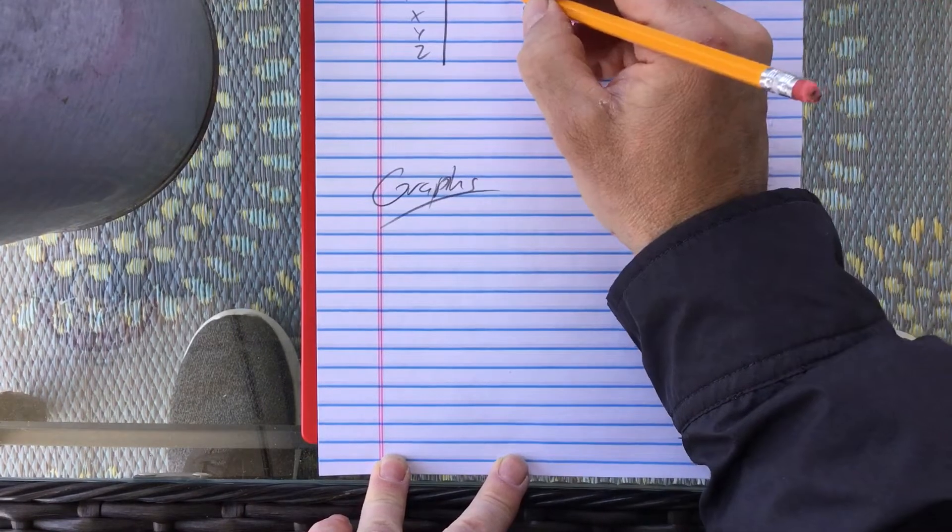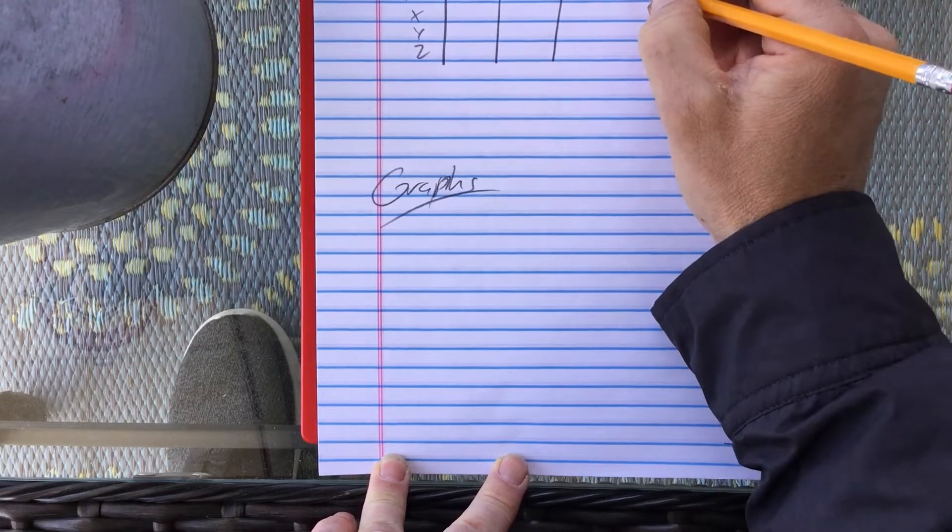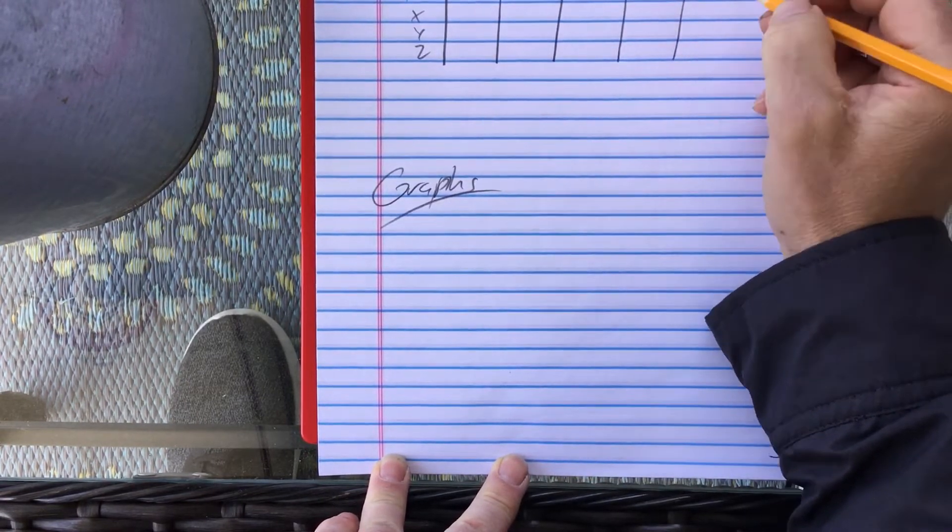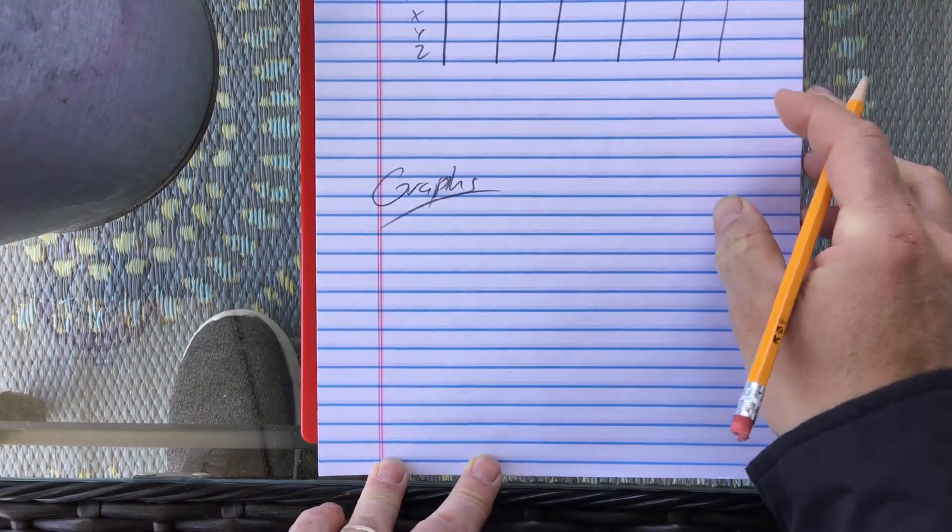Let's see, box one, box two, box three, box four, box five. And let's say the average here. Okay.